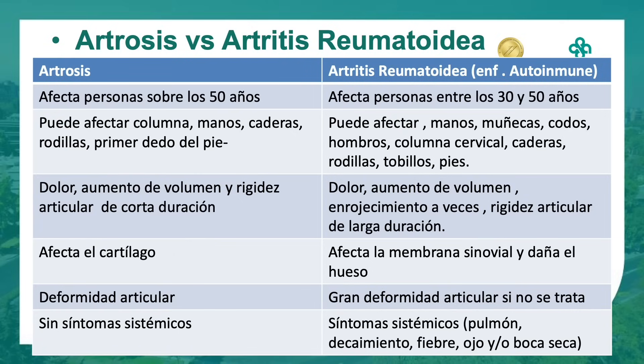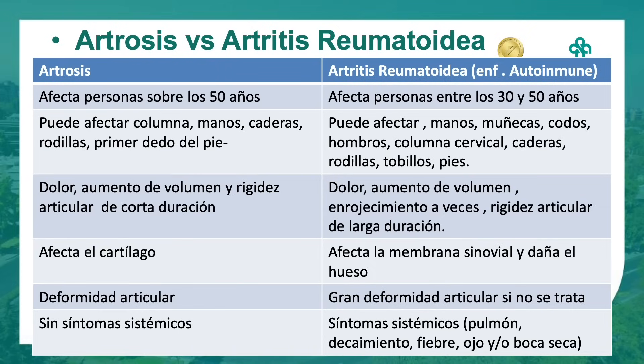En la artrosis se afecta el cartílago mientras que en la artritis reumatoidea se afecta la membrana sinovial, que daña el hueso. La artrosis produce deformidad bien localizada, mientras que la artritis reumatoidea produce gran deformidad si no es tratada. En la artrosis no hay síntomas sistémicos: uno puede tener dolor de rodilla o de manos pero no se siente enfermo. En la artritis reumatoidea en cambio puede haber síntomas sistémicos como compromiso pulmonar con tos, cansancio, decaimiento, fiebre, y compromiso de ojo y de mucosas.